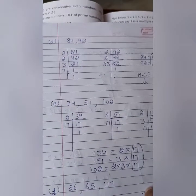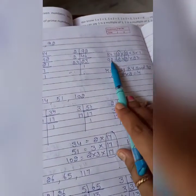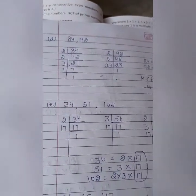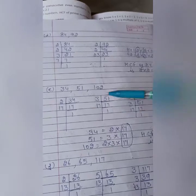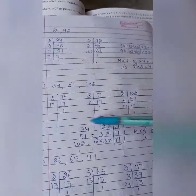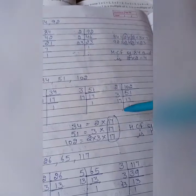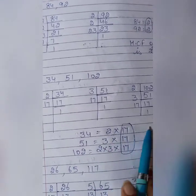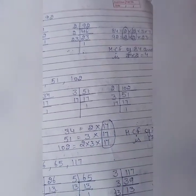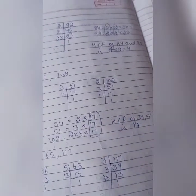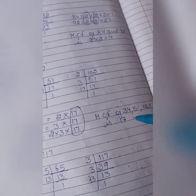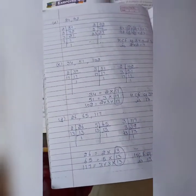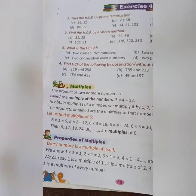Next, 84 and 92. Same, you will divide with 2. Write the common numbers, so the HCF of 84 and 92 is 4. For 34, 51, 102, divide such that 34 equals to 2 multiply 17. So the HCF of 34, 51, and 102 is 17. Same for the next, HCF is 13.